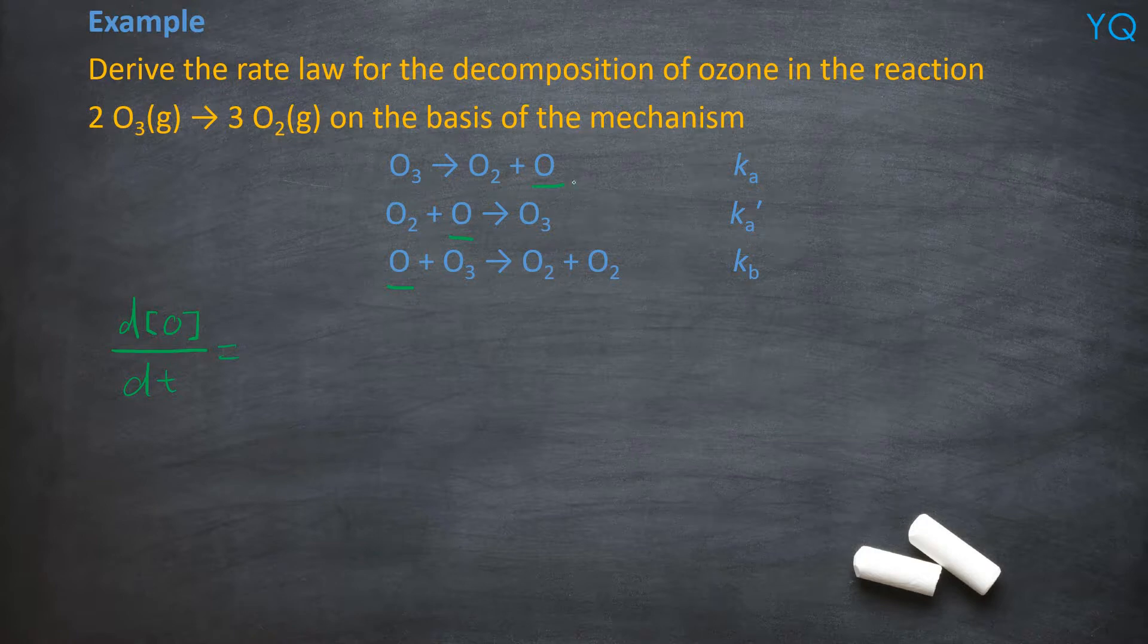So in forming ozone, you look at the first step. So the first step forms ozone. I mean, sorry, it forms the oxygen atom. So Ka times O3.